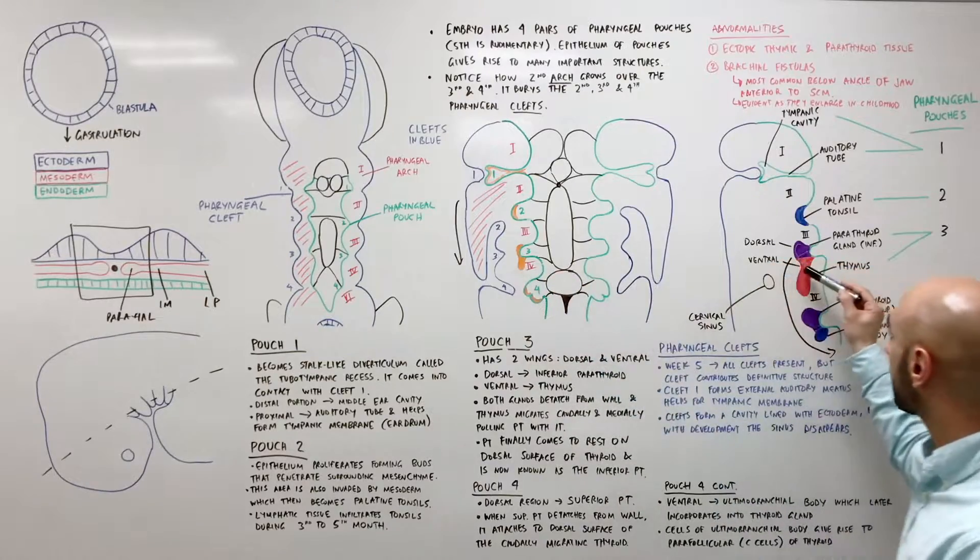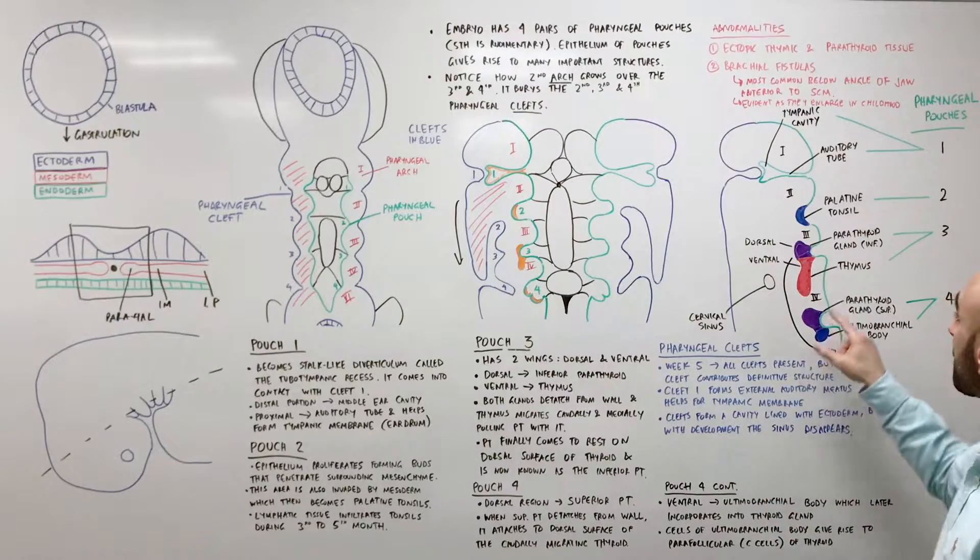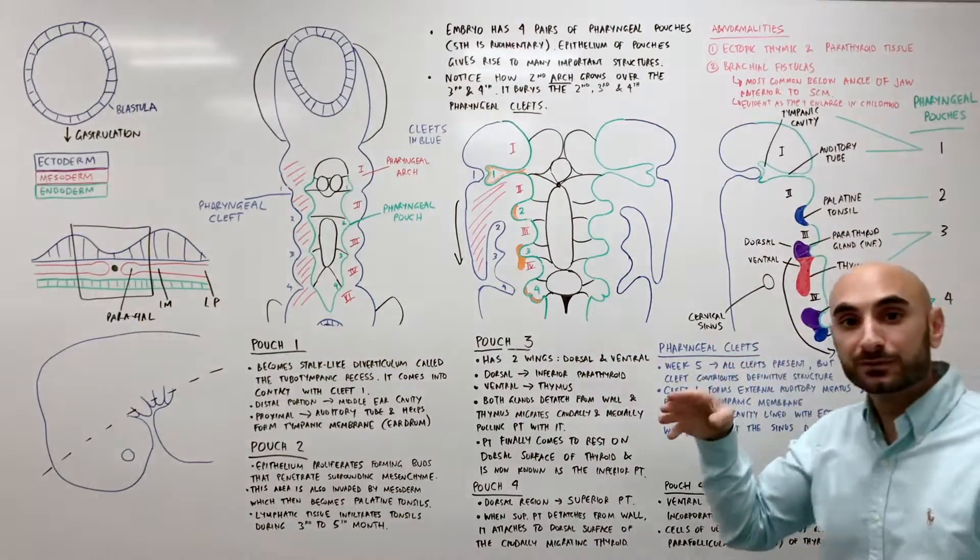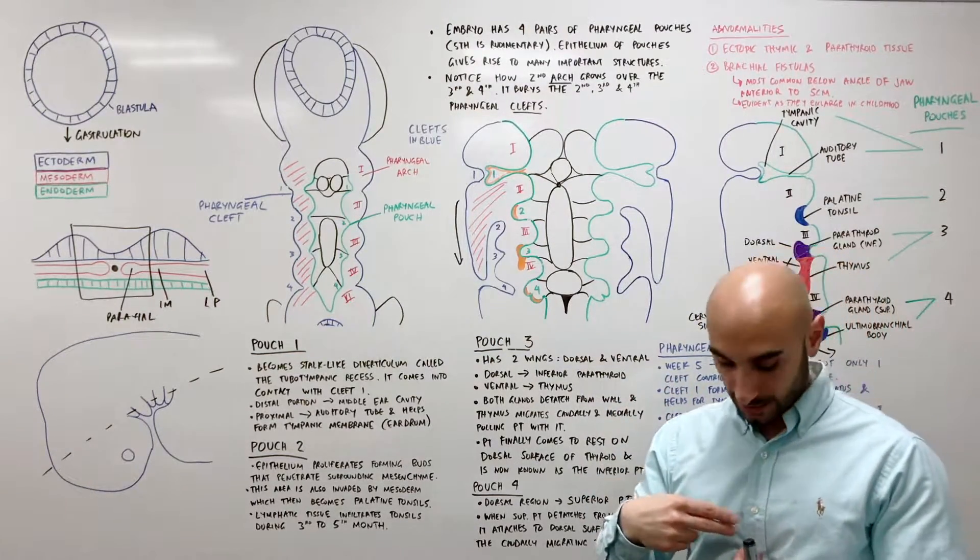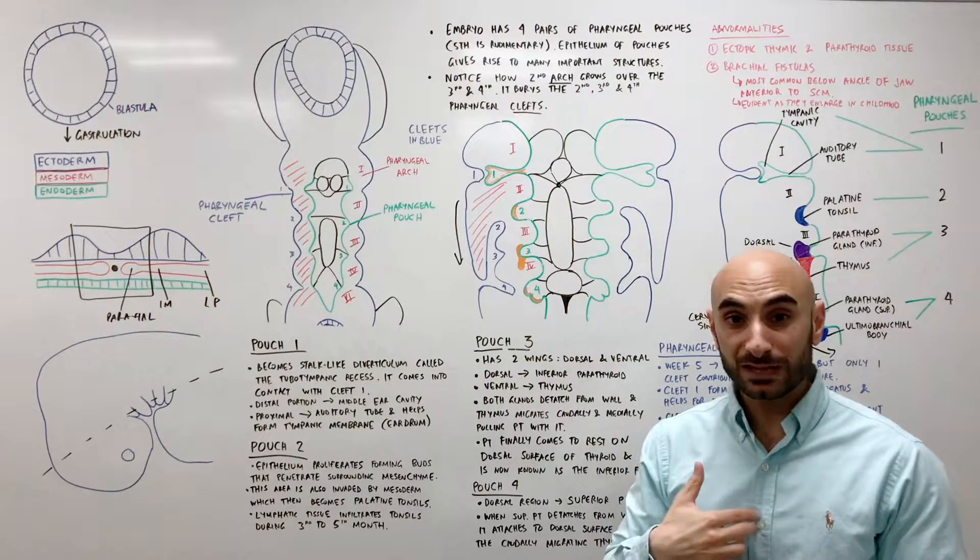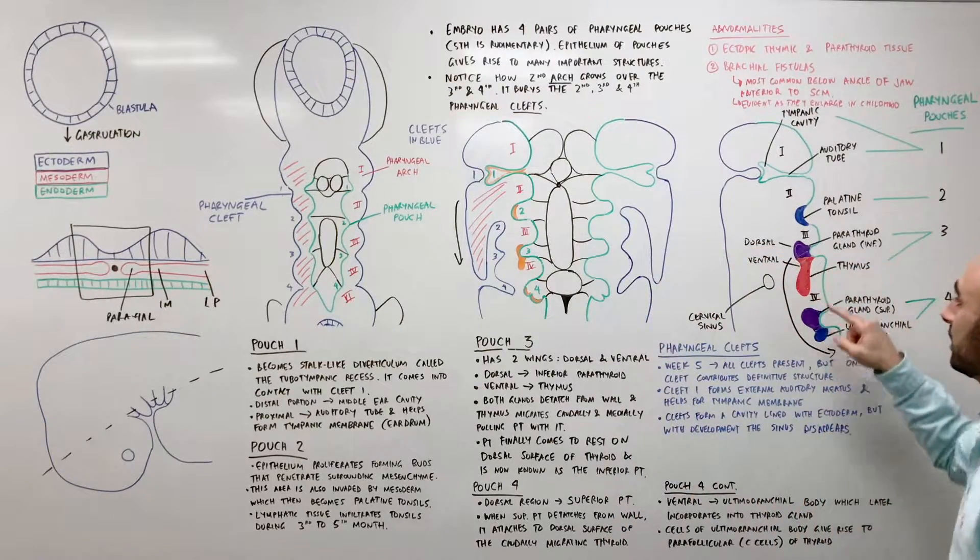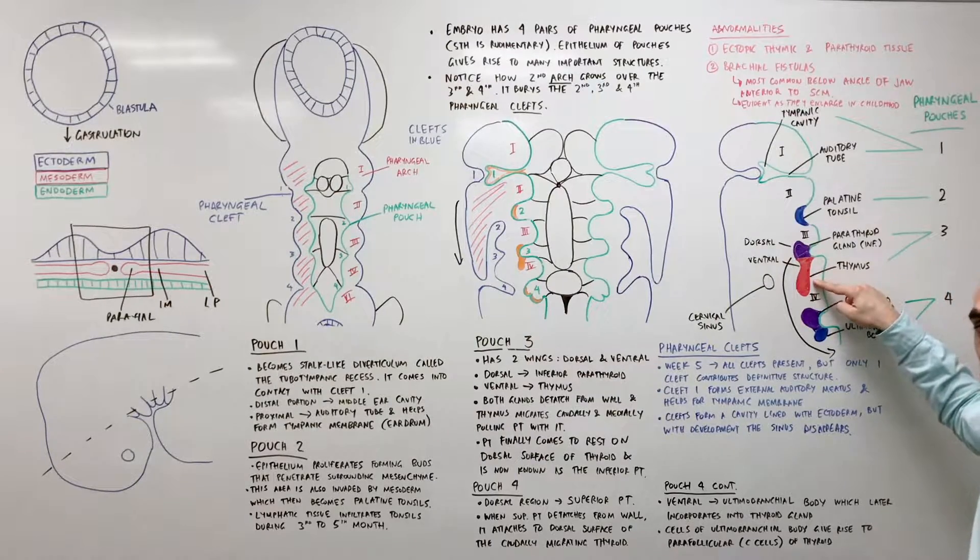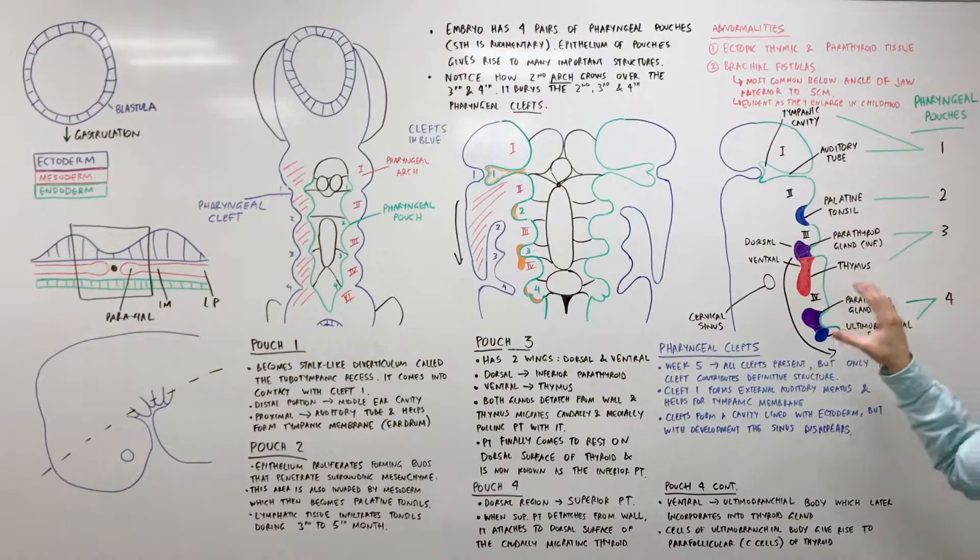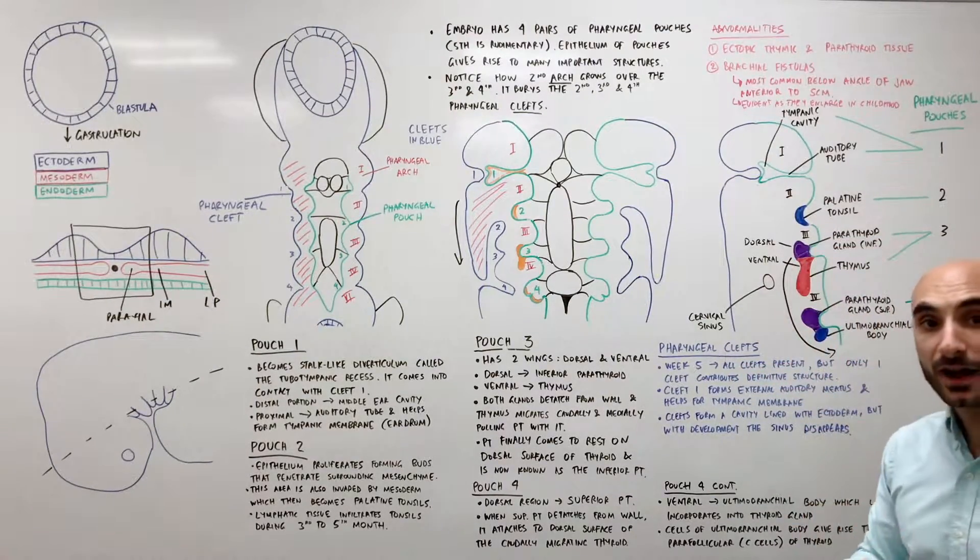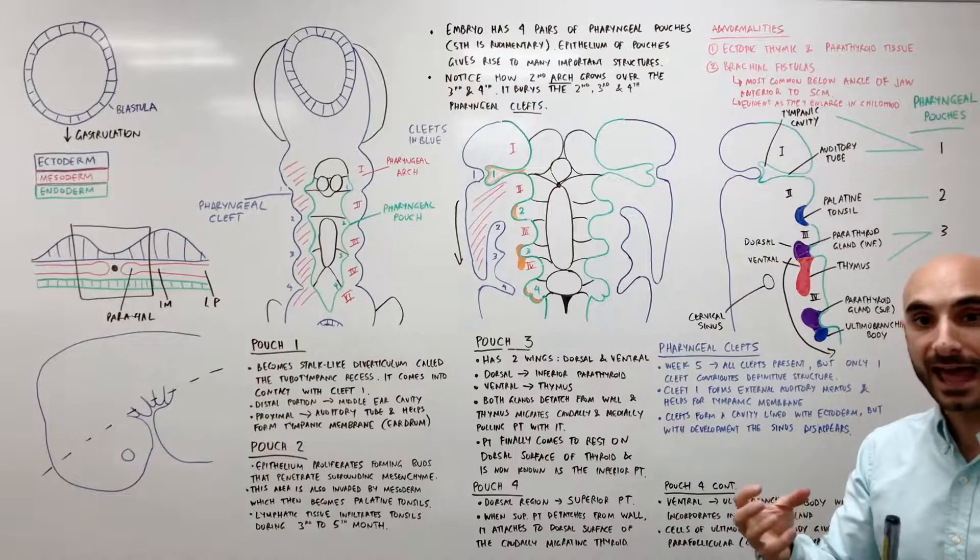You'll notice how it's elongating and moving cordially or down. So what happens is that the thymus gradually moves inferiorly and medially until it reaches its final location posterior to the sternum. This bit, this ventral wing will move down and fuse with its counterpart from the other side and reside in its final location. As it moves down, it pulls down the inferior parathyroid gland with it.